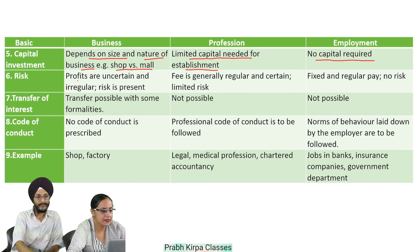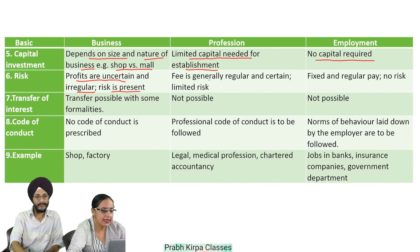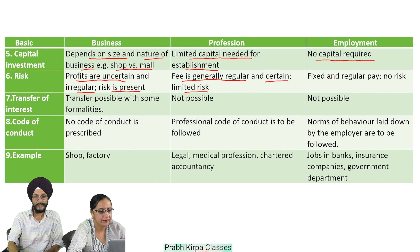Sixth: Risk. In case of business, profits are uncertain and irregular, so risk is present. In case of profession, professional fee is generally regular and certain, so limited risk is there. In case of employment, the employee gets fixed and regular pay, so no risk is there.